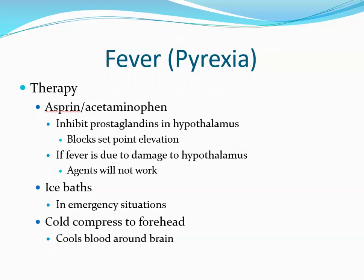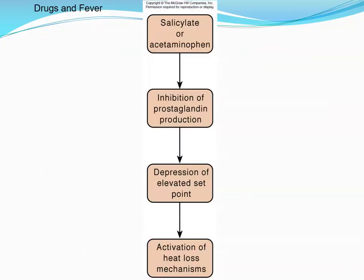Therapies for fever: aspirin or acetaminophen work by inhibiting the synthesis of prostaglandins in the hypothalamus, blocking the set point elevation. However, if a fever is due to damage to the hypothalamus, these agents will have no effect. Ice baths can be used in emergency situations, and applying cold compresses to the forehead helps to cool the blood around the brain.